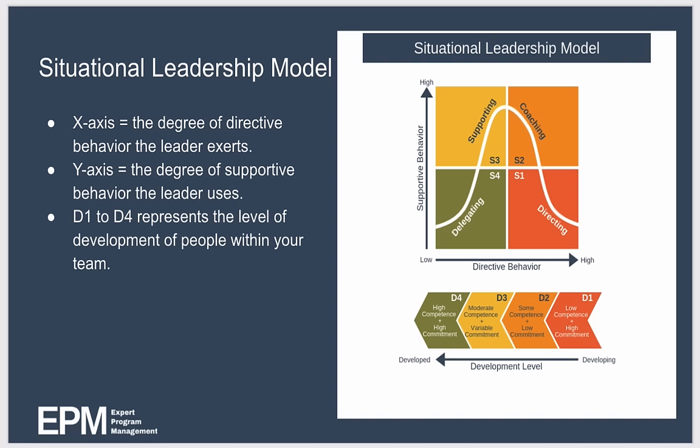At the bottom of the diagram you can see D1 to D4, which represents how well developed, how skilled, and how motivated a team or an individual is — with D1 being the lowest level of development and D4 being the highest.